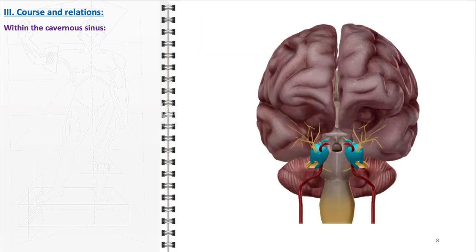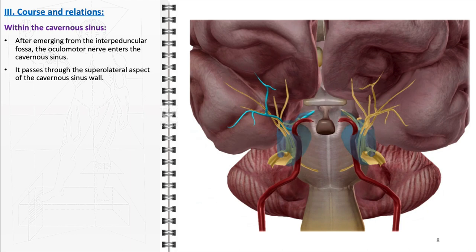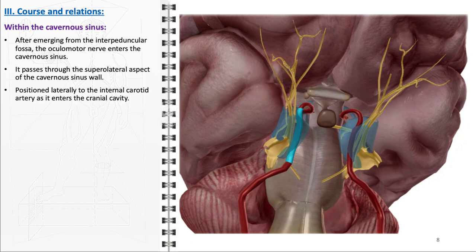The path of the oculomotor nerve within the cavernous sinus exemplifies the intricate anatomical relationships that are critical for its function and clinical significance. After emerging from the interpeduncular fossa, the oculomotor nerve enters the cavernous sinus, a complex venous structure located on either side of the sella turcica at the base of the skull. As it traverses through the cavernous sinus, the oculomotor nerve assumes a specific path along the supralateral aspect of the sinus wall. The oculomotor nerve is positioned laterally to the internal carotid artery as it enters the cranial cavity. Any pathology involving the carotid artery, such as an aneurysm or dissection, can have direct implications on the oculomotor nerve, potentially leading to eye movement disorders or ptosis.